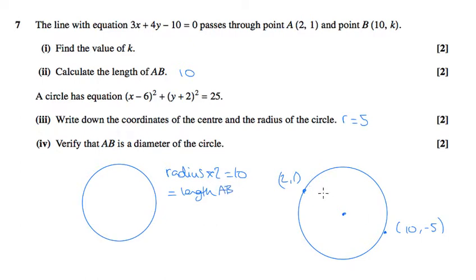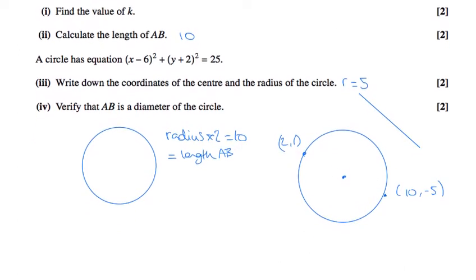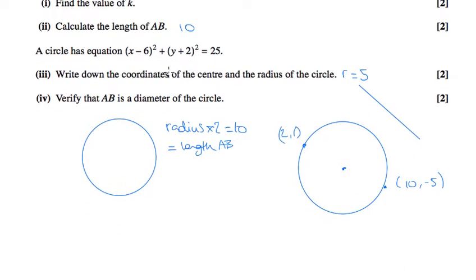But that could just be a coincidence. I could have a length of a line, I could have a length of 10 over here, and it not be the radius of this circle. So how do we show that that is in fact on this circle? Well, the other thing we can use is the fact that we know the centre. We know the centre is 6, -2.